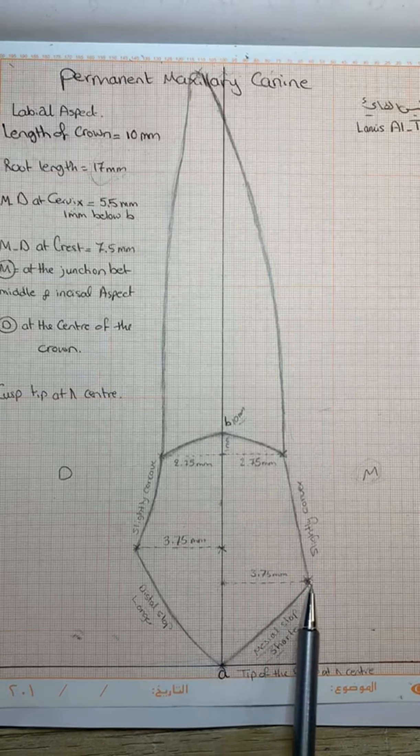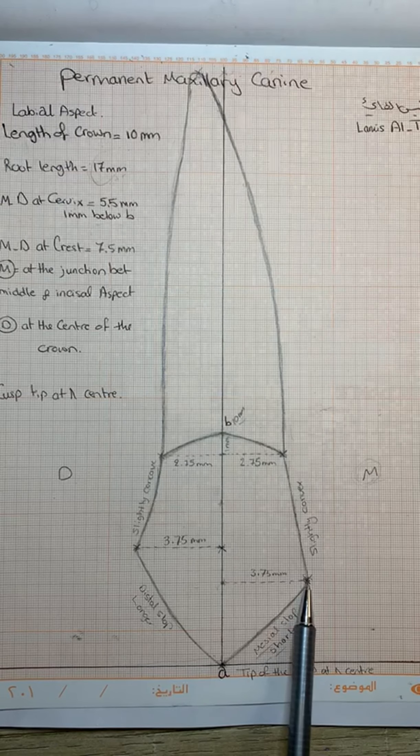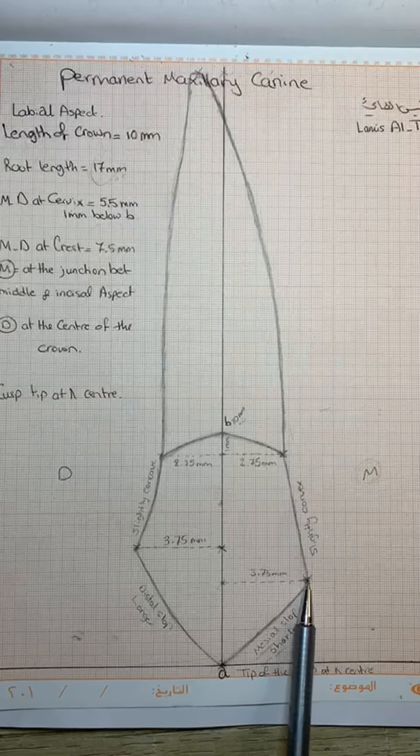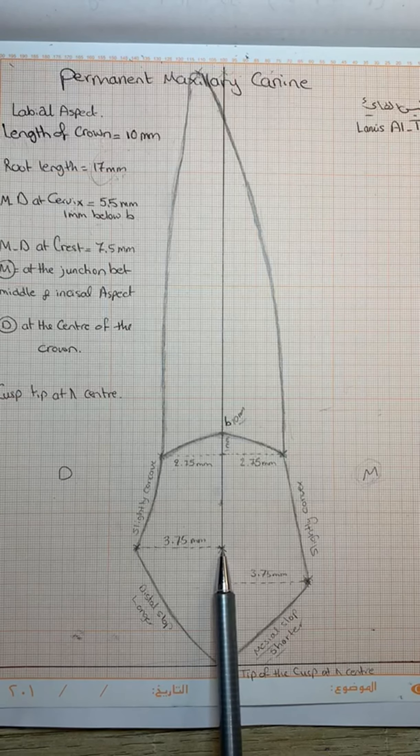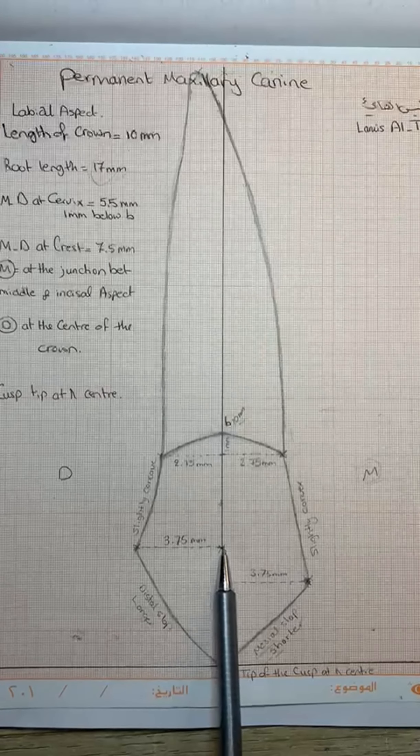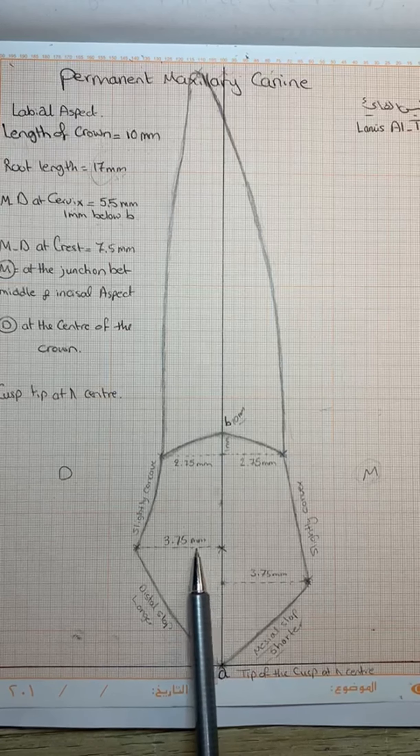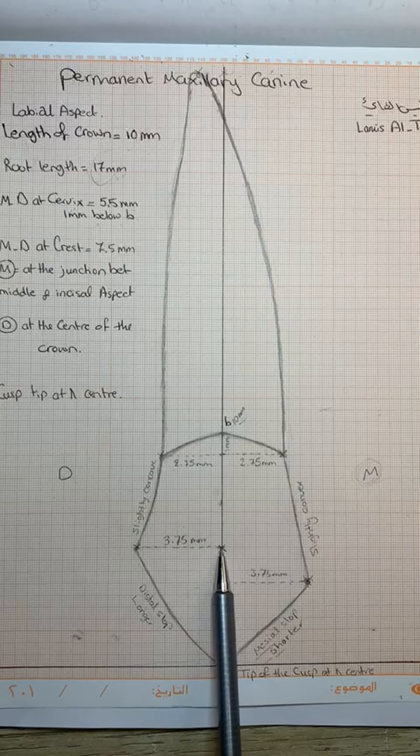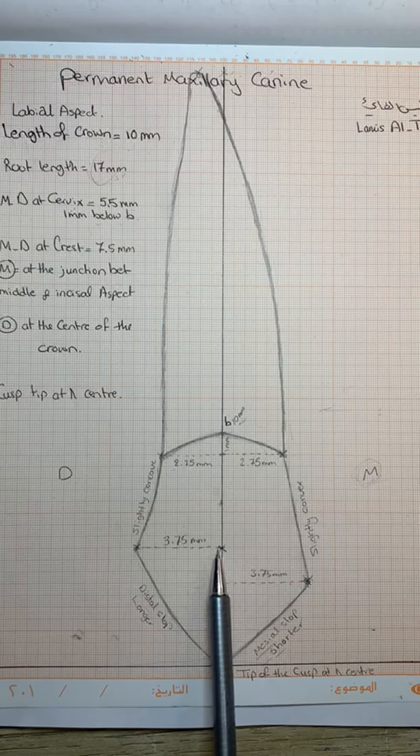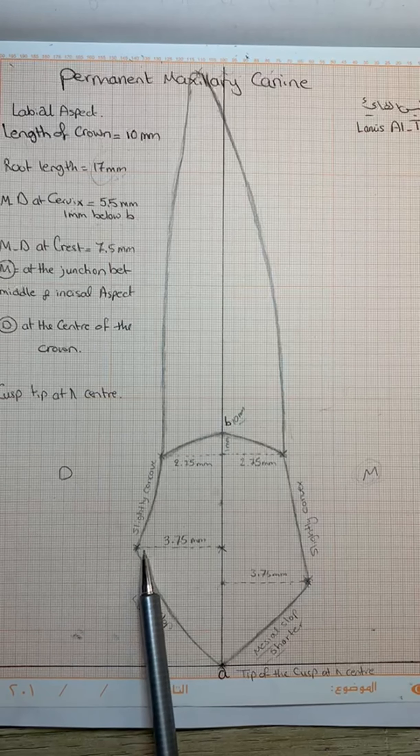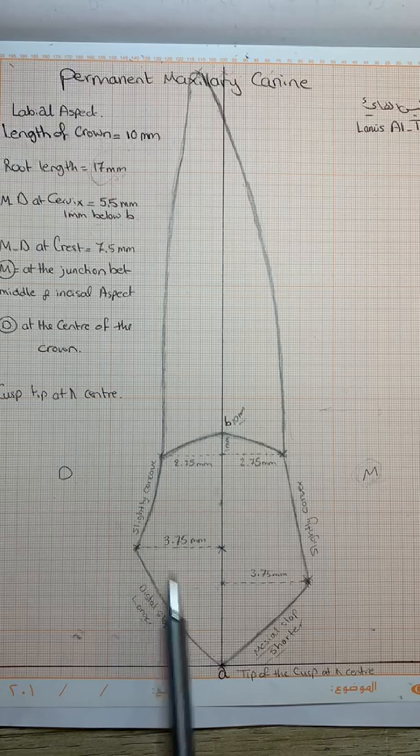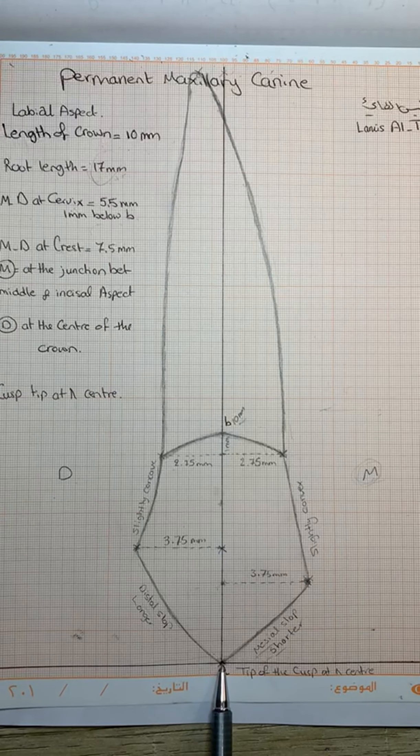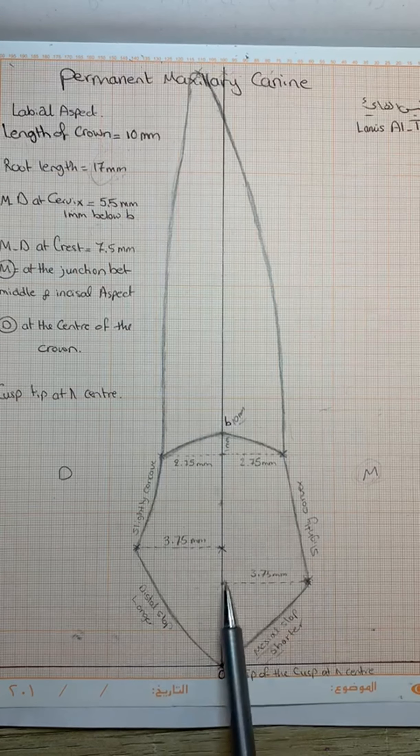We are moving 3.75 mm toward the mesial. While distally, it will be at the center of the crown, or at the center of the middle third. We are moving 3.75 mm toward the distal side. The cusp tip will be at A, which is aligned with the long axis of the tooth.